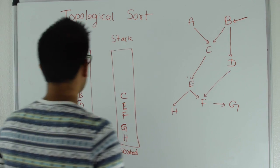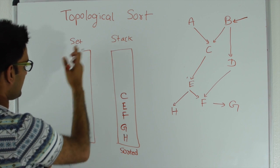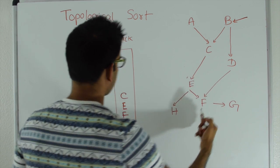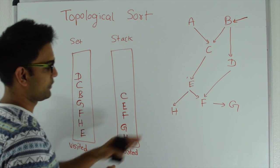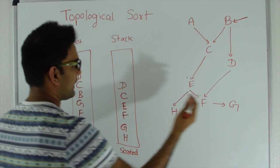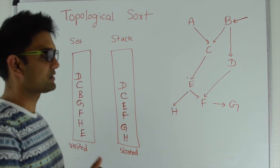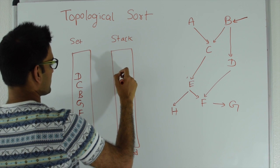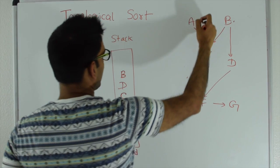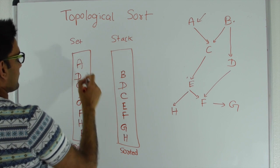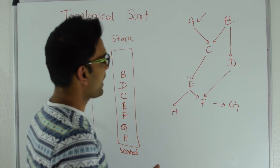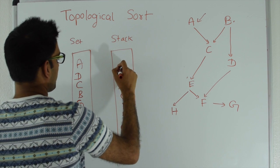We go back to b. B has another child d, and d is not in the visited set. So we put d in the visited set. D has a child f which is already in the visited set, so we don't explore it. D has no more children, so we put d into the stack. Back at b, both children are explored, so we put b into the stack. The only unvisited node remaining is a, so we go to a and add it to the visited set. A's child c is already visited, so we come back and put a into the stack.